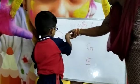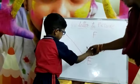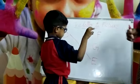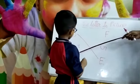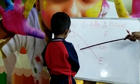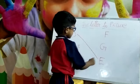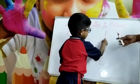Match the picture to letter. What is this picture? F-Fu. Where is the F? Good.